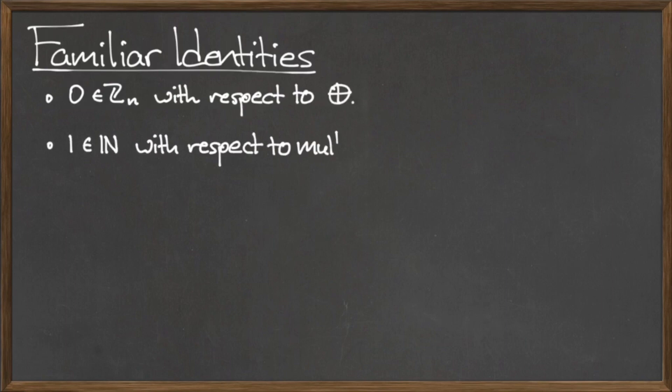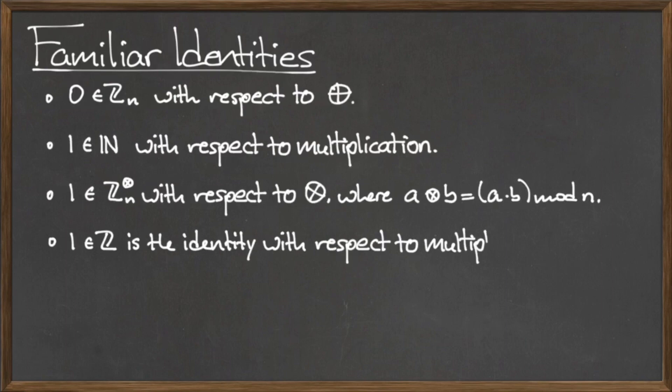Here are some familiar identities with respect to certain binary operations. The element 0 in Z mod n is the additive identity with respect to the binary operation circle plus. The element 1 in the natural numbers is the identity with respect to multiplication. The element 1 in Z n without 0 is the multiplicative identity with respect to the binary operation circle times, where a circle times b is equal to the quantity a times b mod n. Finally, the element 1 in Z is the identity element with respect to integer multiplication.